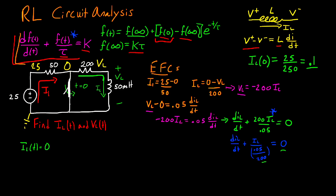So IL of T is equal to 0 plus F of 0, which we found to be 0.1 at the beginning, minus F of infinity again, so minus 0, multiplied by E to the negative T, divided by tau. So 0.05 divided by 200. And this is the answer for IL of T.